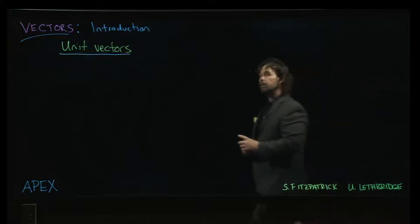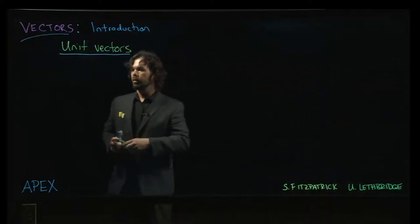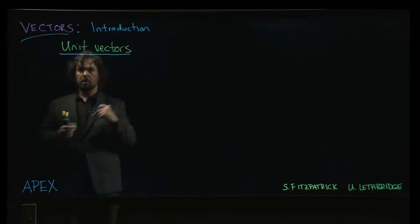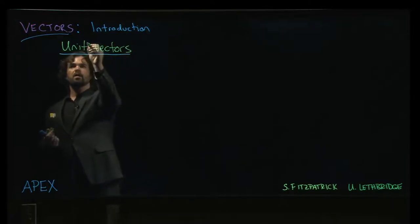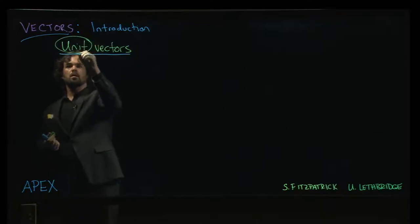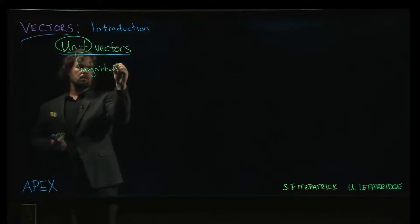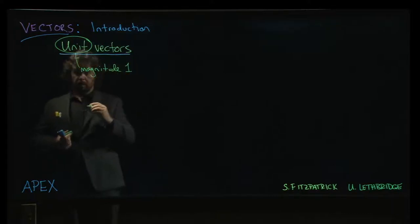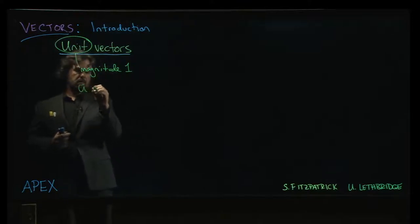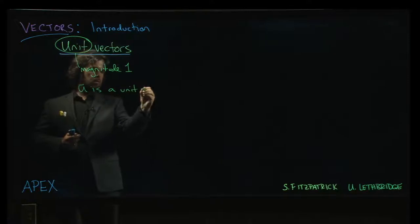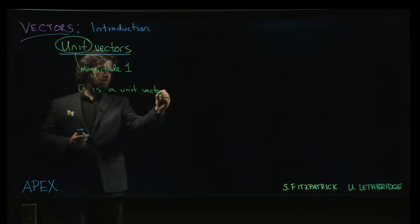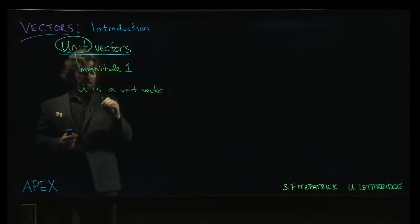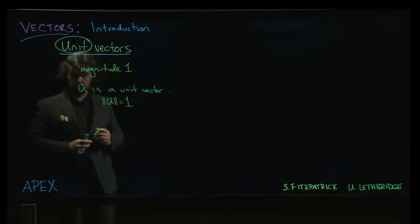Alright, so our next topic is unit vectors. Now, the definition here—the word unit—it just means any vector of magnitude 1. So if u is a unit vector, that's just the same thing as saying the magnitude of u is equal to 1.